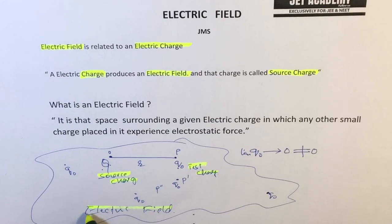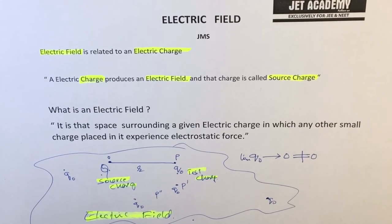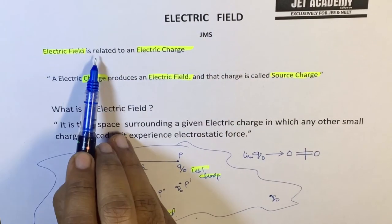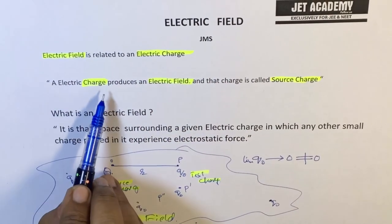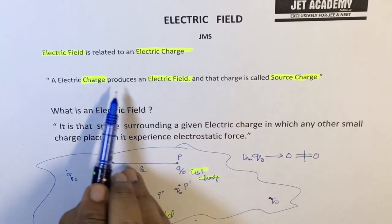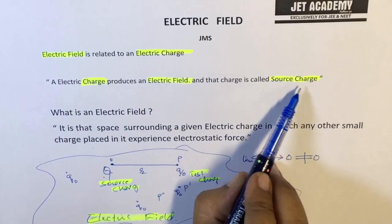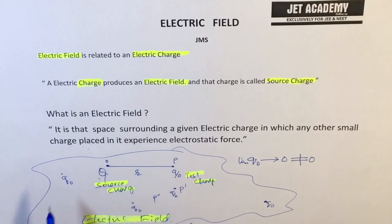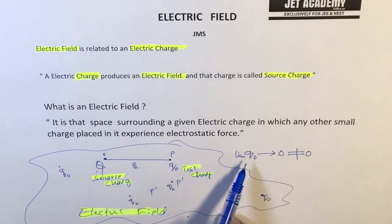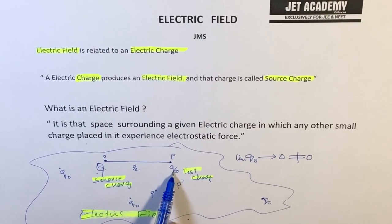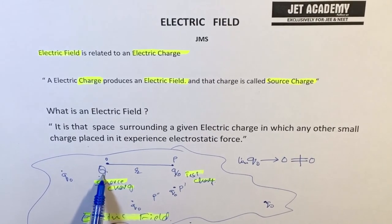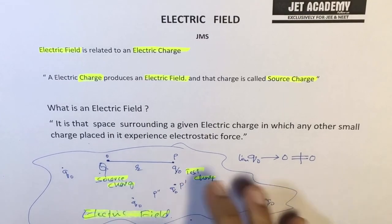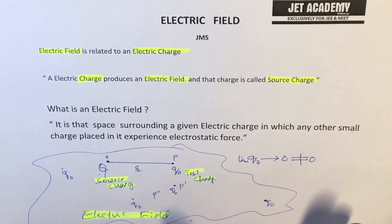This is the simplest concept. Don't project any idea other than this. Electric field is related to electric charge. Electric charge produces electric field, and the charge which produces the electric field we name as source charge. The charge which we use to test the existence of the electric field we call the test charge. Q0 is the test charge and capital Q is the source charge. The magnitude of Q0 is very small; Q may be any given charge. We will understand the magnitude of electric field in the next class.